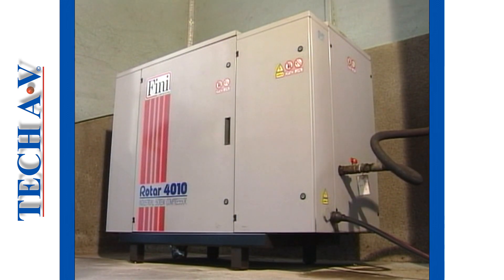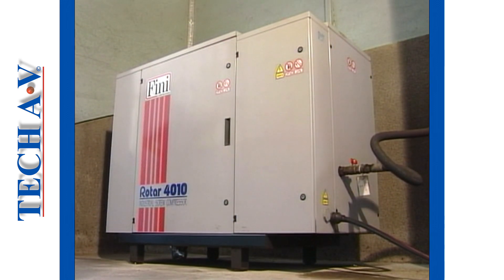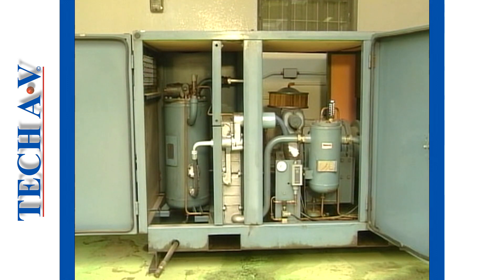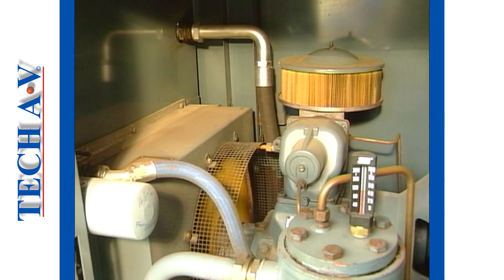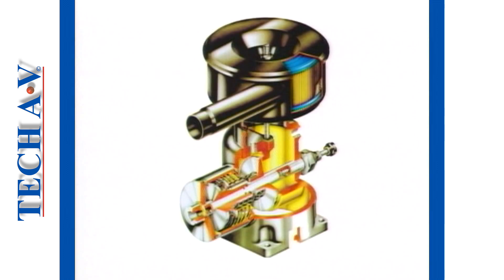Some compressors, notably rotary screw types, do not stop running even when the pressure gets to the maximum working pressure. Instead, the compressor unloads. In this instance, the drive motor remains operating, but the compressor does not deliver air into the air main. This involves some complicated control devices that we need not be concerned about at this time.